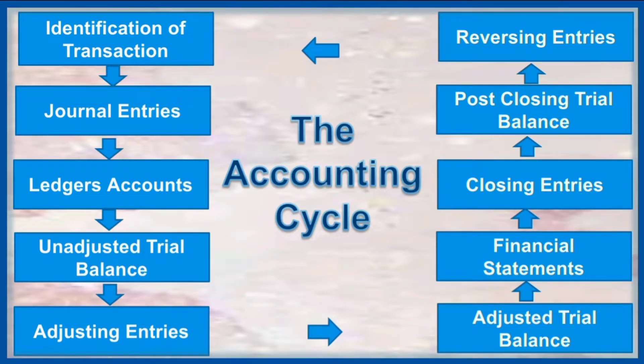The accounting cycle: The first step is identification of transaction. Then we make journal entries and then post those journal entries into the ledger accounts. Then we prepare unadjusted trial balance. Then adjusting entries are made and an adjusted trial balance is prepared. Through the adjusted trial balance, we make the financial statements. Then closing entries are made and post-closing trial balance is prepared. At the end, reversing entries are made and hence the new year starts again with the identification of transactions. This is the whole process of accounting.